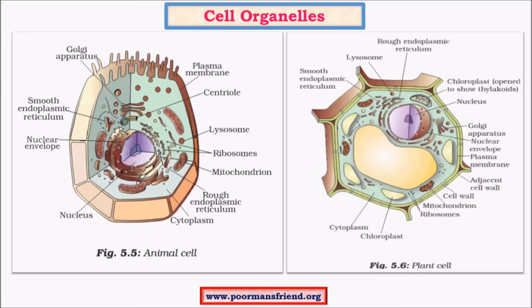Except for those differences, there are many similarities like the presence of other cell organelles like lysosome, ribosome, mitochondria, endoplasmic reticulum, cytoplasm, nucleus, and Golgi apparatus. All these cell organelles are common to both plant cell as well as animal cell, and each of these organelles have the same functionality whether they are part of plant cell or animal cell.